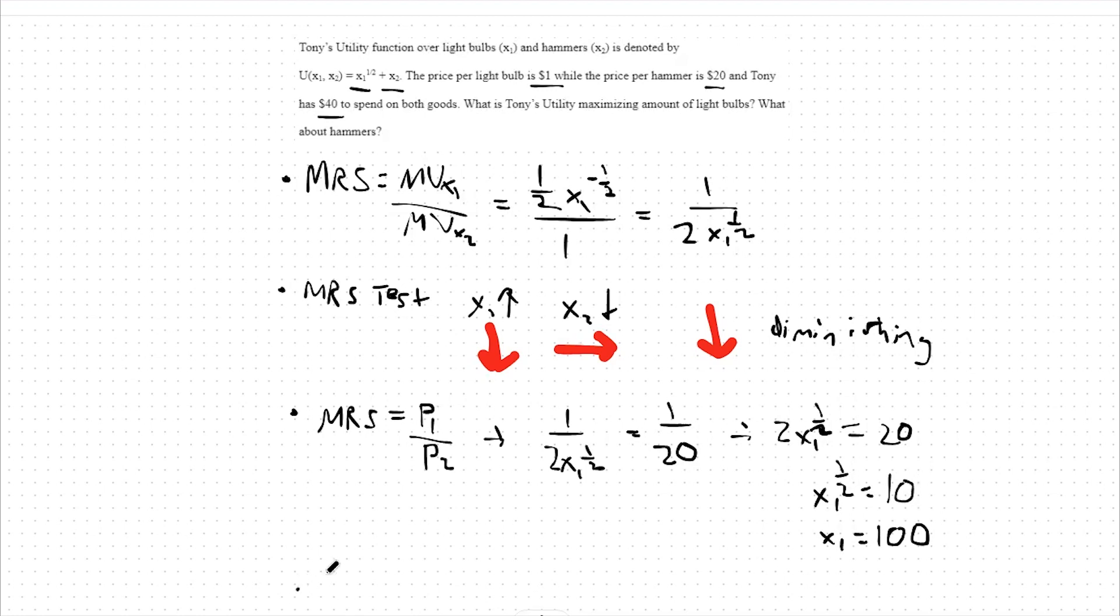Again, to solve for x2, we use our budget constraint, p1 x1 plus p2 x2 equals our income m.